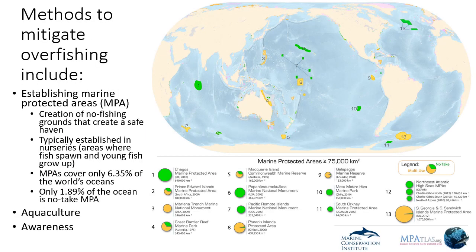Probably the most effective way to mitigate overfishing is to establish marine protected areas, or MPAs. These are protected in one way or another and can be multi-use, single-use, or no-take zones. No-take means no species can be removed — 100% protected. Multi-use allows recreation and taking certain species at certain times of year, but it's heavily regulated. Only about 6.35% of the world's oceans are in a marine protected area, and less than 2% of the entire ocean is a no-take zone.